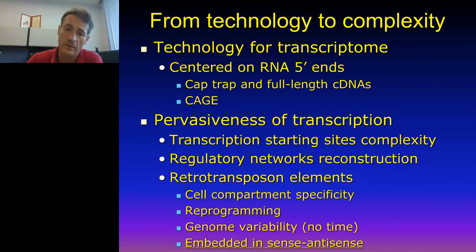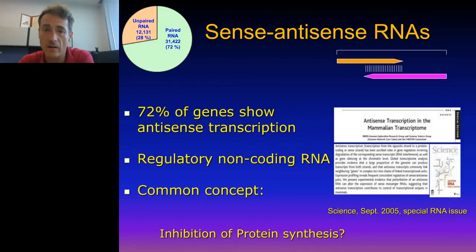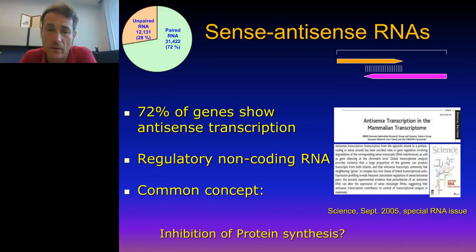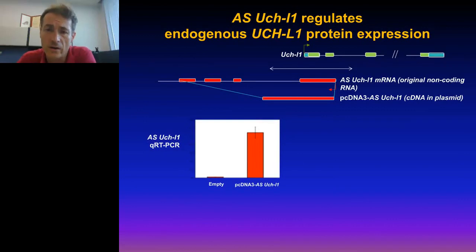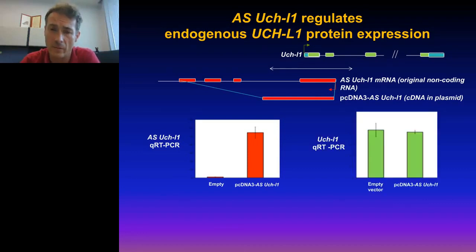The last part I want to talk about is that retrotransposon elements were found to function as enhancers of translation. This comes from a study looking at sense-antisense transcripts, where we thought they may control protein synthesis — probably through inhibition of protein synthesis or some kind of negative control. With Stefano Gustincich, who was interested in studying the antisense of UCHL1 — a gene related to Parkinson's disease — he identified this antisense non-coding transcript in red, while the green is the coding transcript. If he transfects the non-coding RNA, we wanted to see if there is any regulation of the coding part, but we saw no regulation whatsoever at the RNA level of the coding transcript.